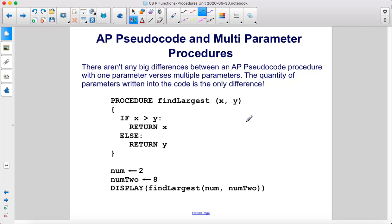There aren't any big differences between an AP pseudocode procedure with one parameter versus multiple parameters. The quantity of parameters written into the code is the only difference.